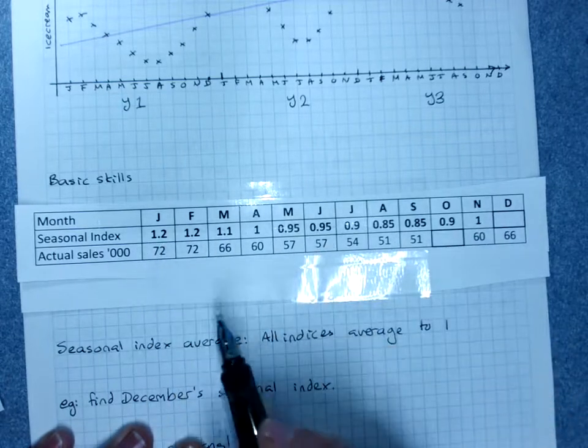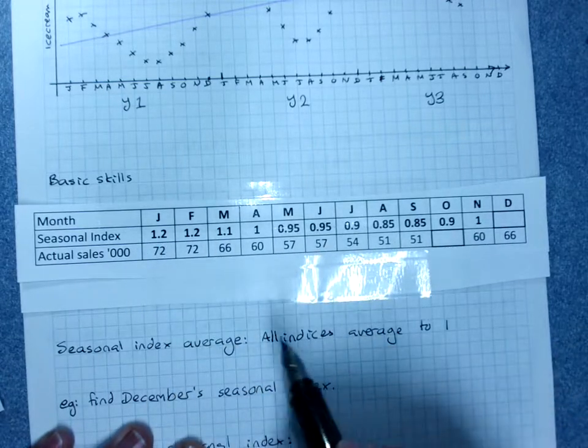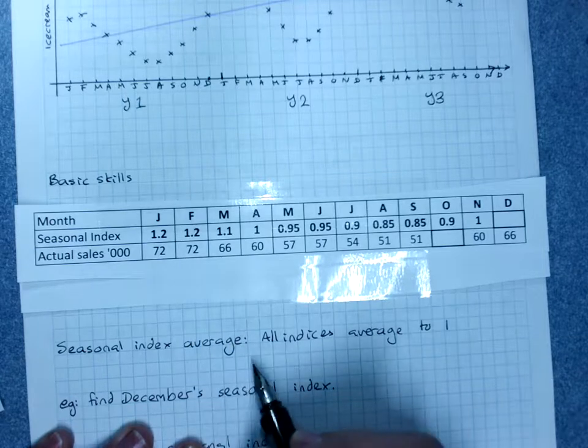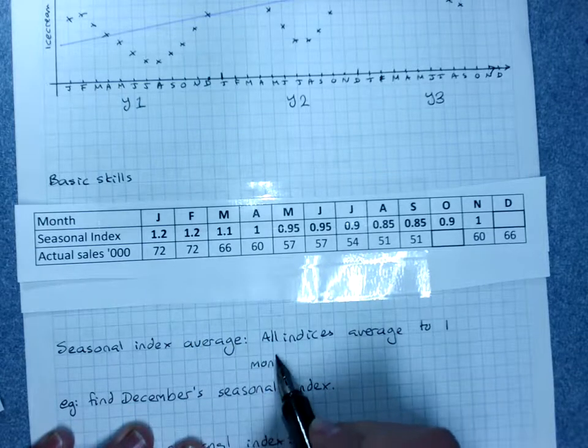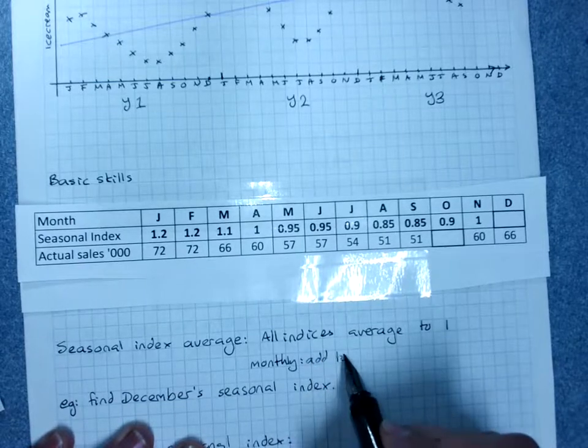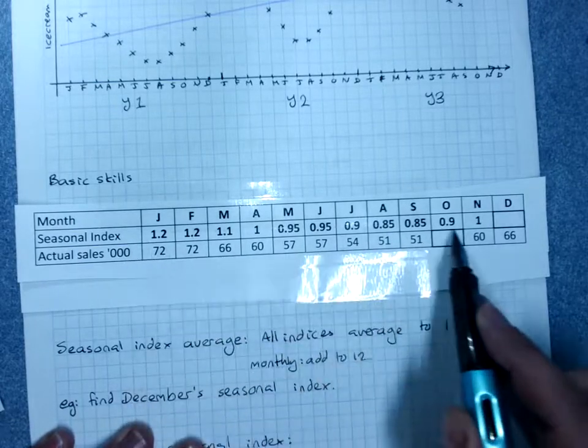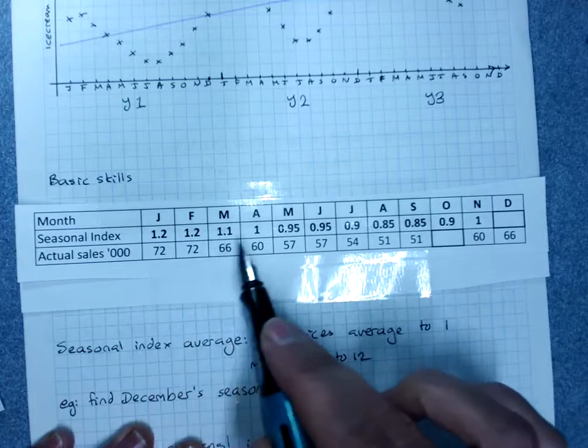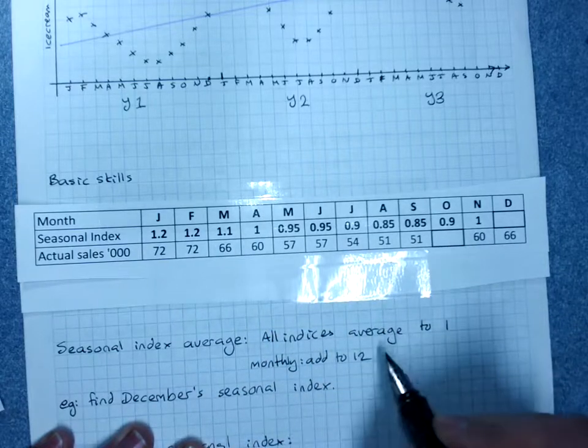If I added up all the indices and divided by the number that there are, which is twelve for monthly, I would get one. What that means is monthly quarterly adds to twelve.